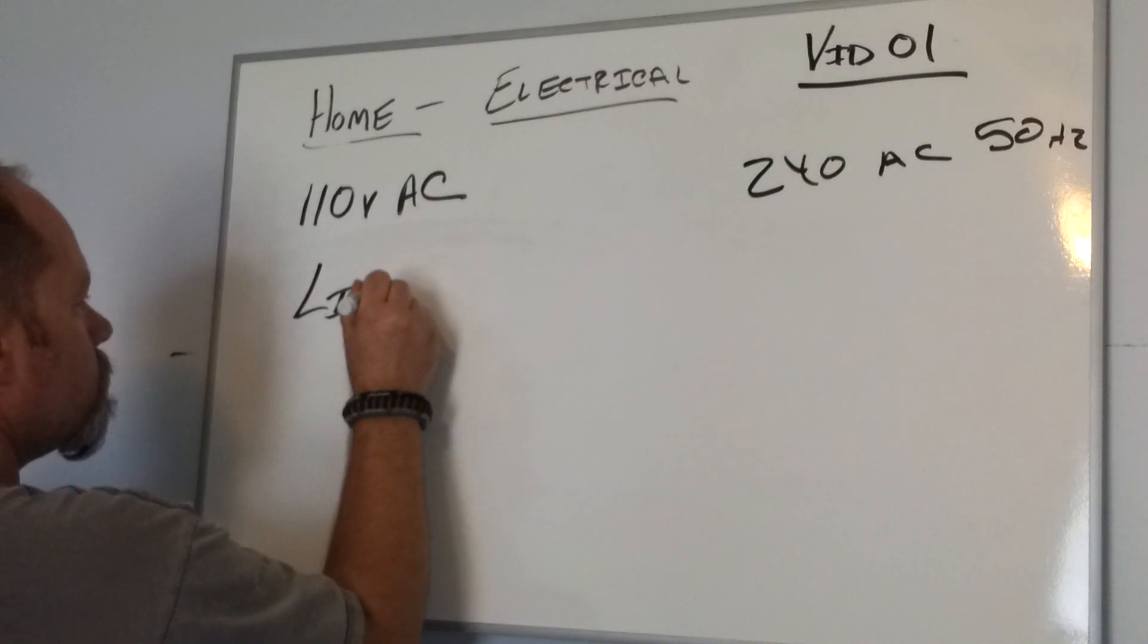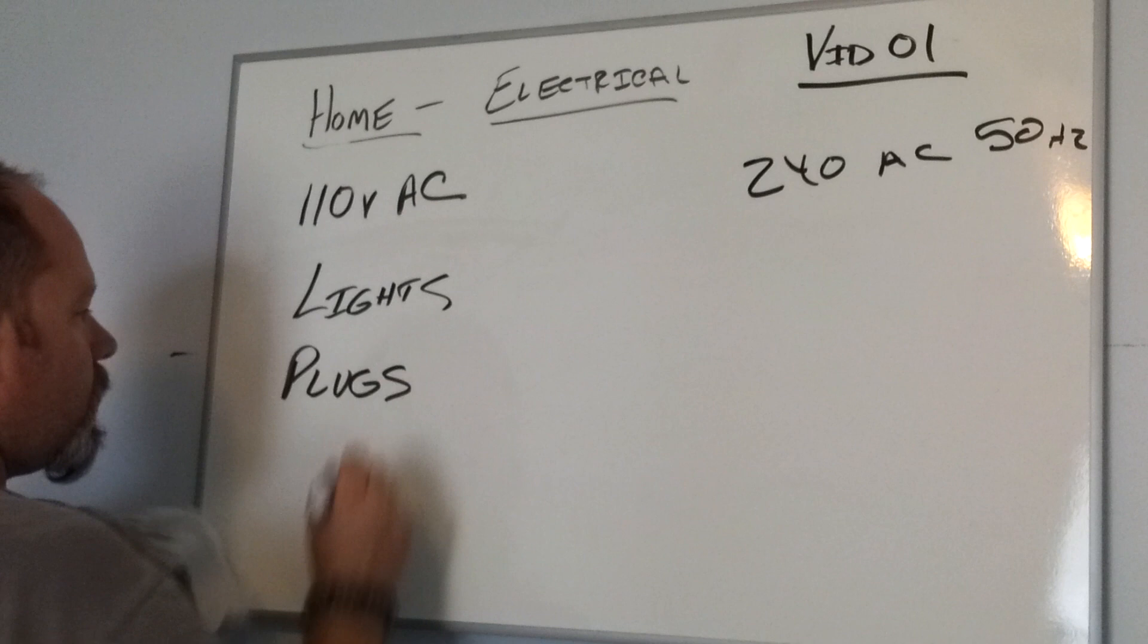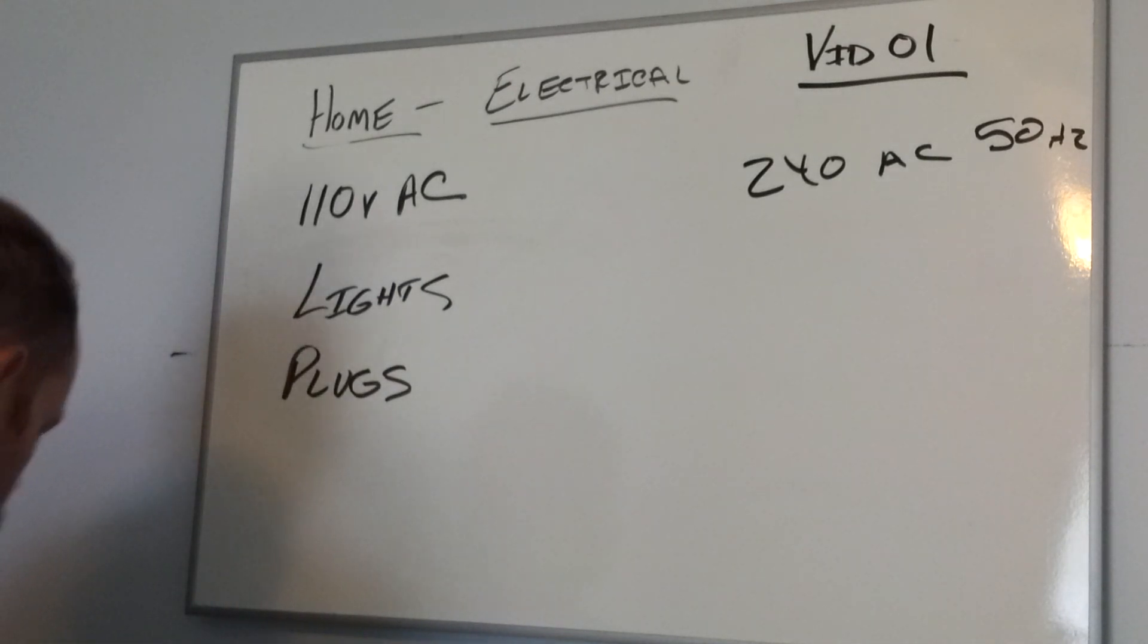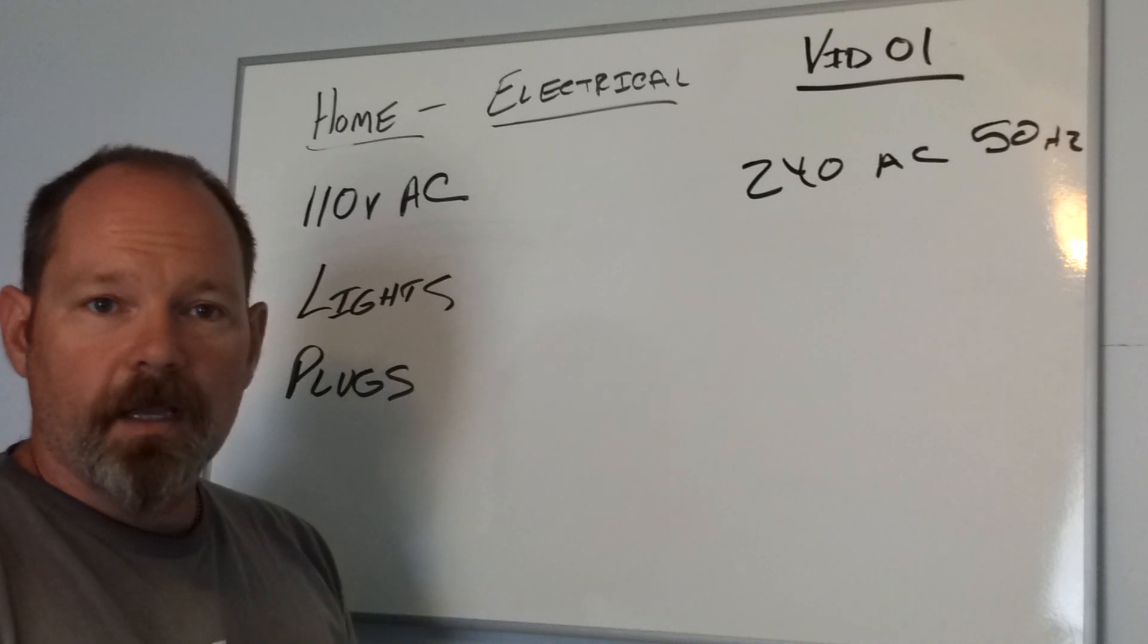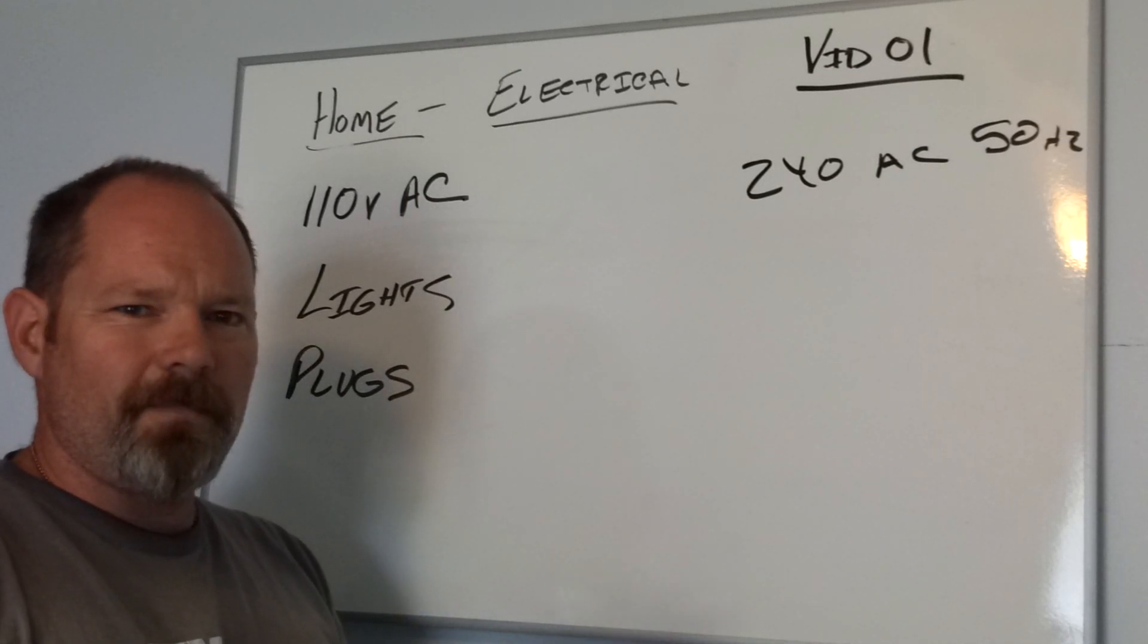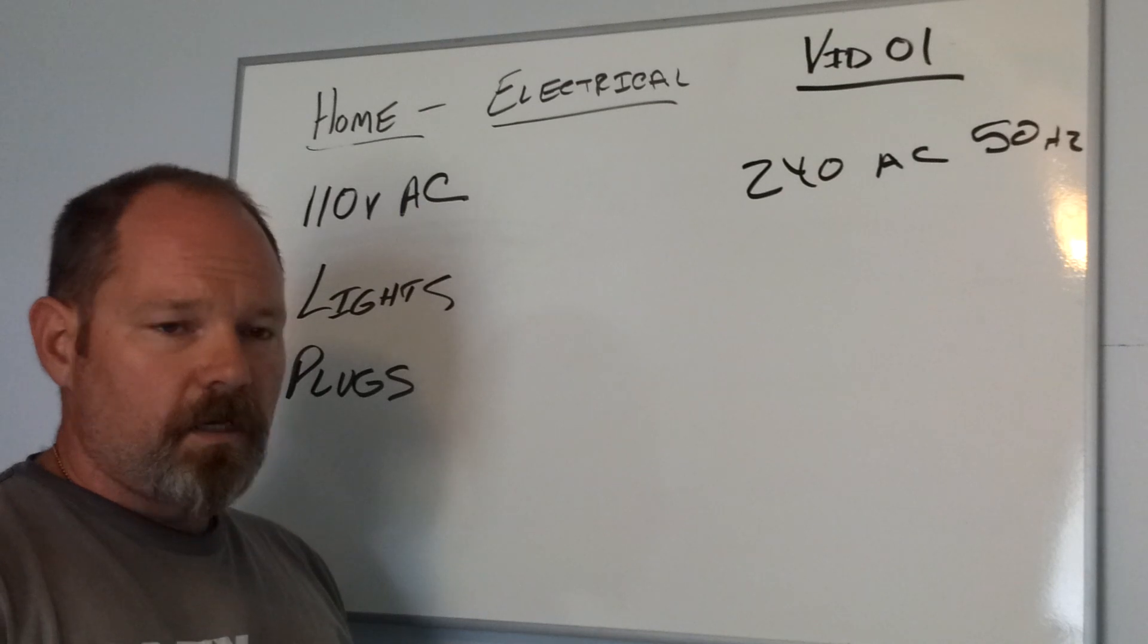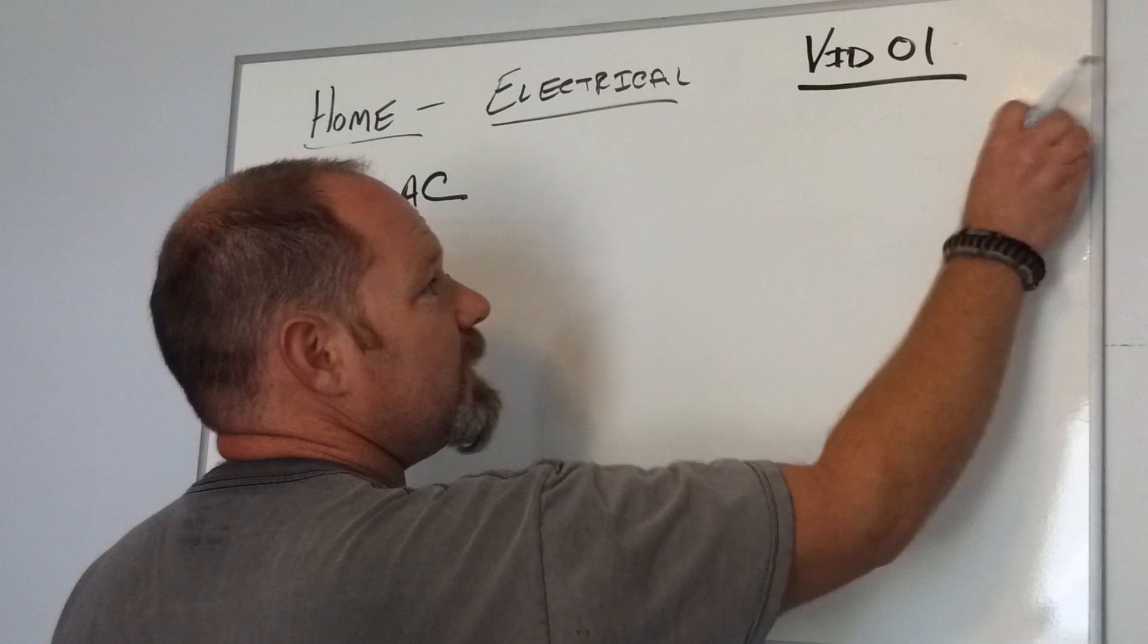We have lights and we have plugs. Other things that operate off of 110 are going to be your microwave, your refrigerator, your dishwasher. Things that you may not see where they plug into. Again, this is the basic video. If you already know this stuff, this is beyond what some of you need to know, so just skip forward to some of the other advanced videos.